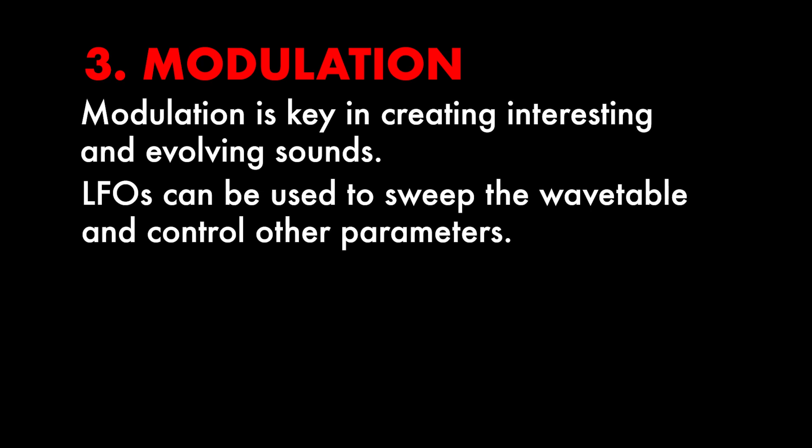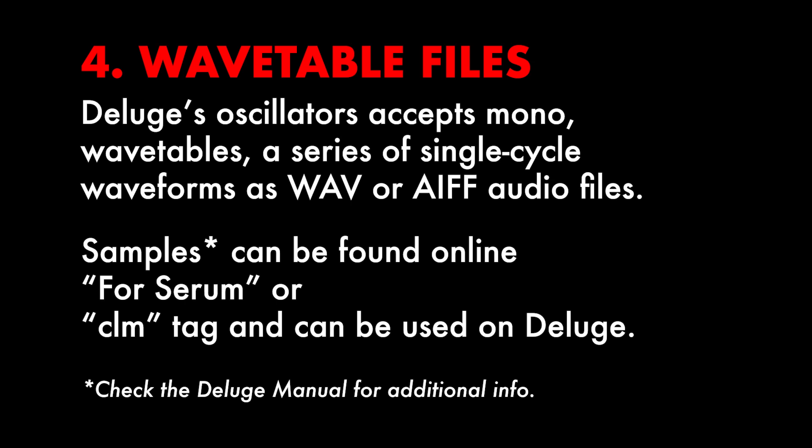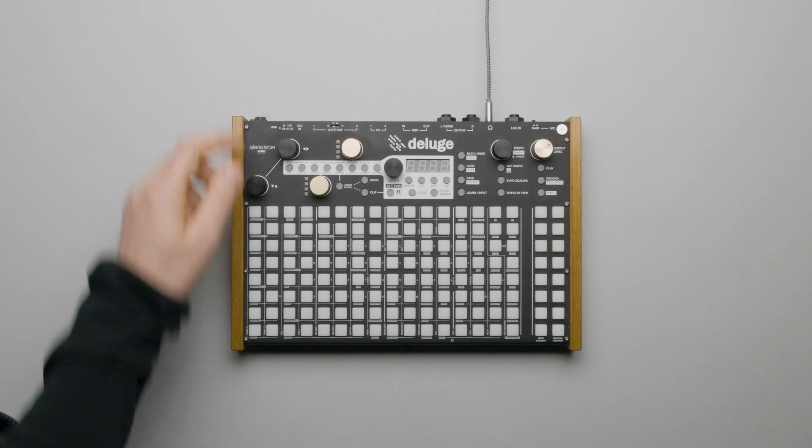This type of synthesis benefits greatly from modulation. Scanning the position of a sample in conjunction with LFO modulation creates more dynamic sounds. For this to work properly, the oscillator wants to see a Wavetable audio file, which consists of a series of single-cycle waveforms. These can either be WAV or AIFF mono files. Samples designated for Serum or those with a CLM tag can be read by Deluge.